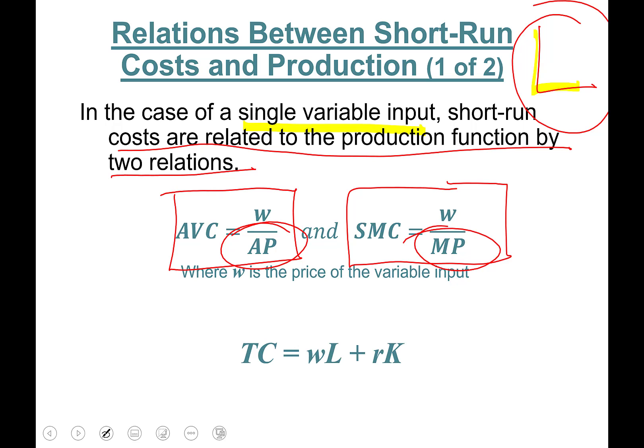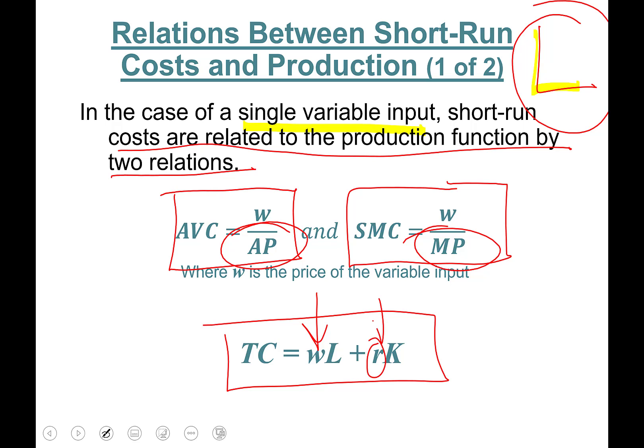Remember, total cost is calculated as wage rate times labor plus rental rate — capital's price — times the level of capital.